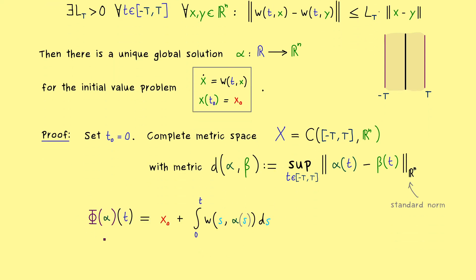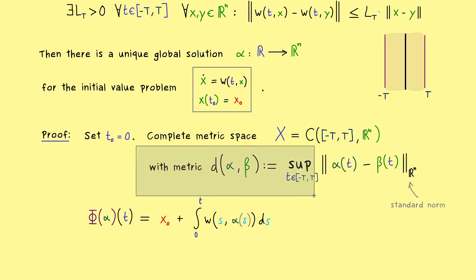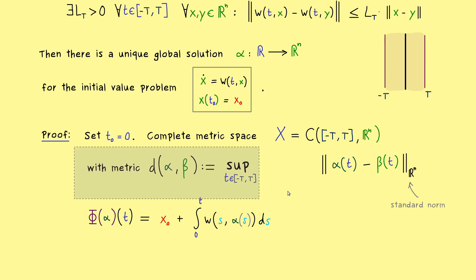The contraction we consider is the same map φ, whose fixed points give us solutions of the initial value problem. However, the problem is that to show φ is a contraction — as in the original proof — we would need to choose T very small. But we want to make T larger and larger, so we need to change the metric on our space. What helps is to include a suitable scaling factor as an exponential function, using our constant L_T. We use a metric with a factor e^{-2L_T|t|}, so that points far from the origin get scaled down.